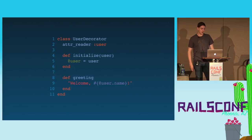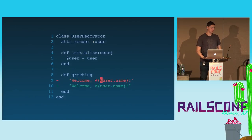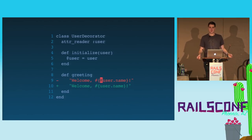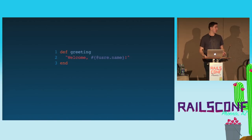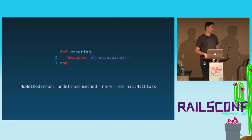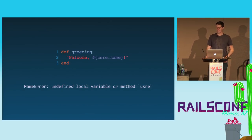Here we have a user decorator with an attribute reader for the user, and the greeting method returns 'welcome' and then the user's name using the instance variable. The mutation testing tool shows we can replace the user instance variable with the user method — we have the attribute reader, so why not use it? The method call has nice properties too: if we typo the instance variable, we silently get nil and get a cryptic error. But if we typo the method call, we get a clearer error indicating we typoed something.